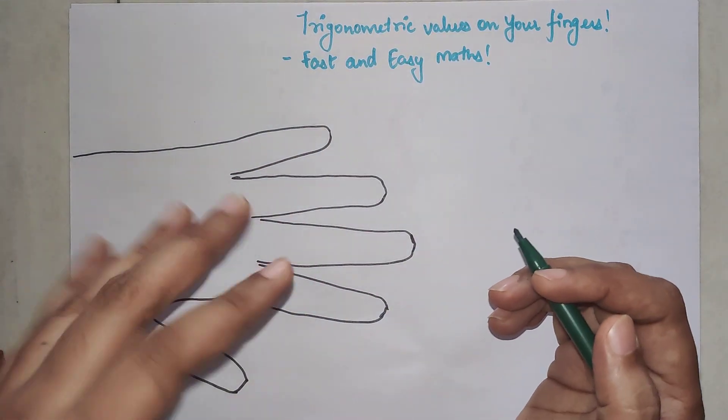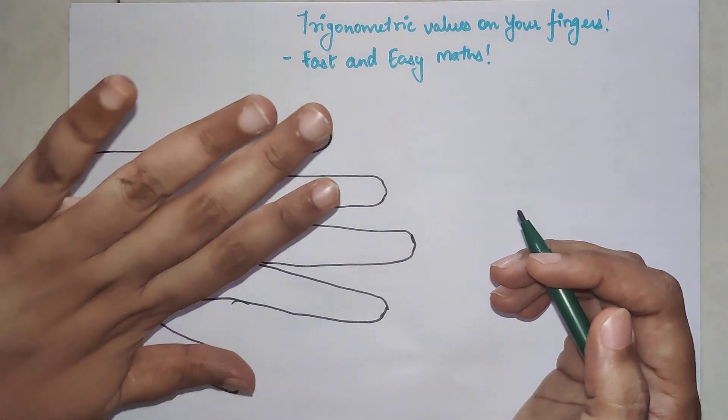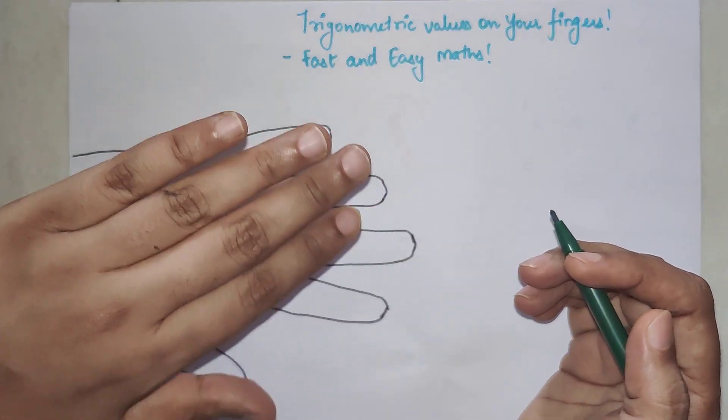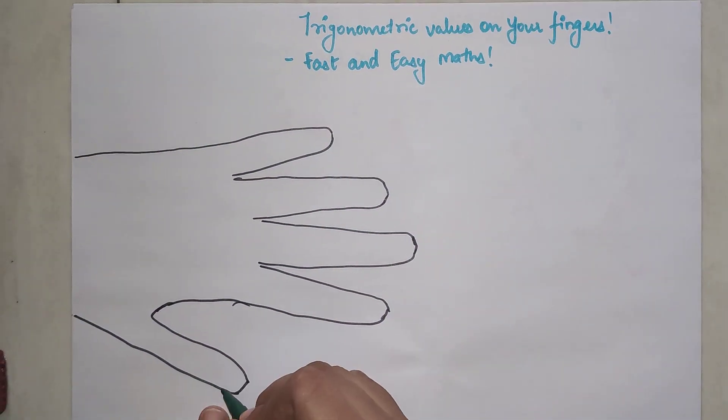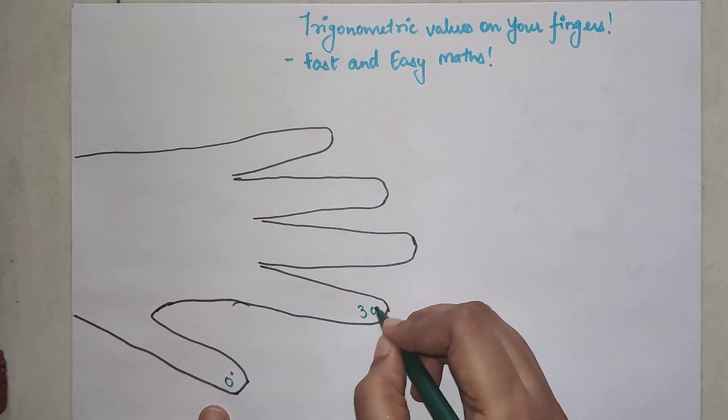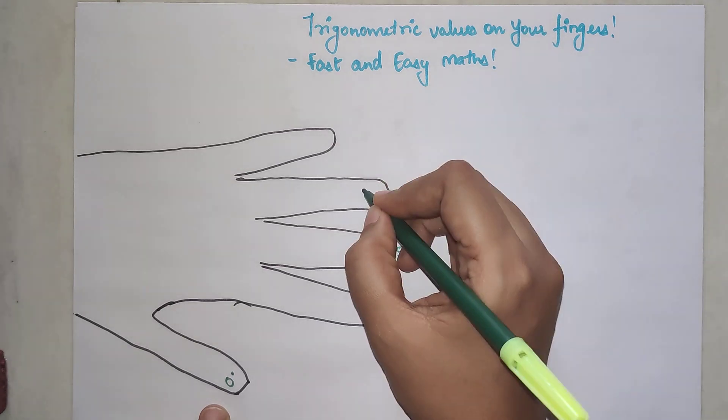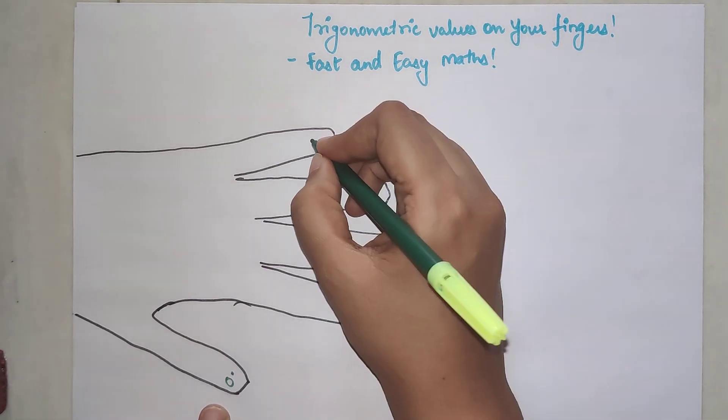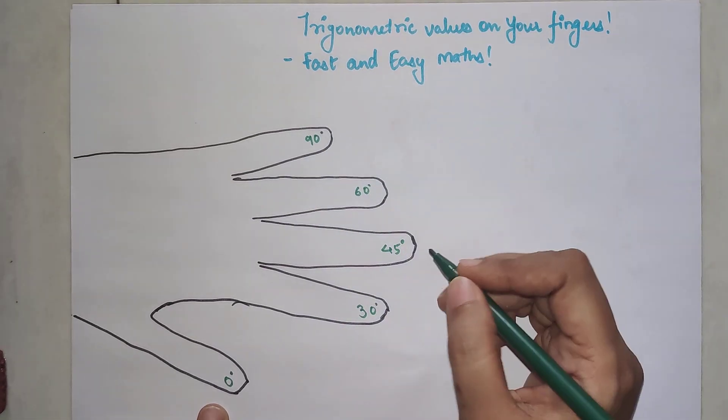So basically you have to look at your left hand. This is my thumb. So here I am going to put 0 degrees. This is going to be 30 degrees. This is going to be counted as 45 degrees. This is going to be counted as 60 degrees and this is going to be counted as 90 degrees.